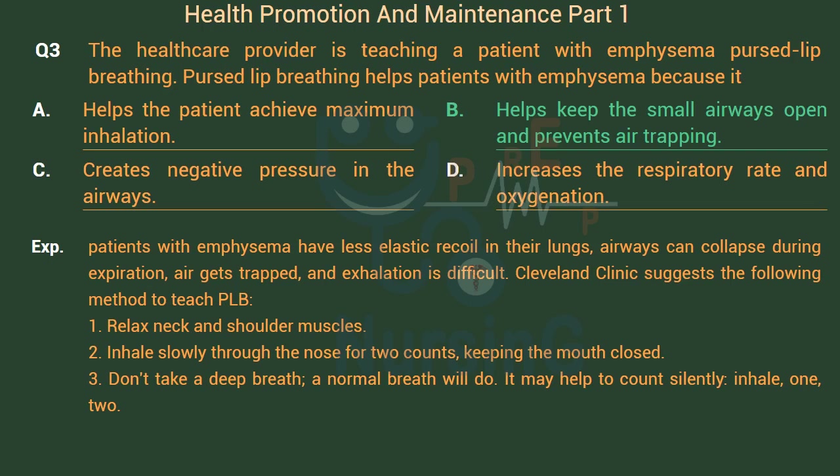Cleveland Clinic suggests the following method to teach pursed-lip breathing: 1. Relax neck and shoulder muscles. 2. Inhale slowly through the nose for 2 counts, keeping the mouth closed. 3. Don't take a deep breath — a normal breath will do. It may help to count silently: Inhale, 1, 2.